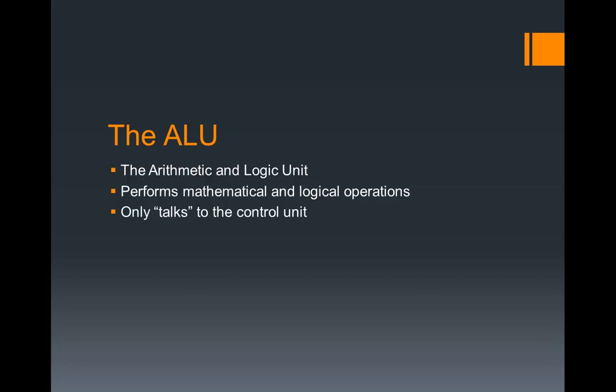The ALU really only talks to the control unit. The ALU is not directly connected to anything other than the control unit. So anytime a mathematical computation needs to happen, the portion of the computer that's looking for the answer has to tell the control unit, which then sends it to the ALU, which in turn sends it back to the control unit, and the control unit sends it back to the device that asked for the mathematics. Logical operations are a little different — they deal in true and false statements rather than numbers, which sometimes can equate to 1 for true and 0 for false, but we'll get to that in a later lesson.